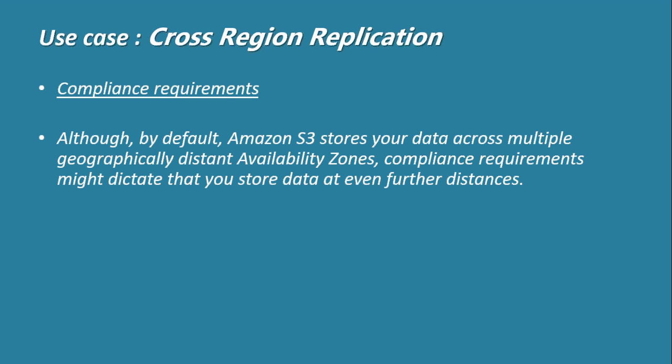The use cases for cross-region replication: the first is compliance requirements. While AWS S3 by default replicates your data across different geographical regions and availability zones for availability, there may be a compliance requirement specifying that your data must reside within specific regions — for example, due to standards like ISO 27001, HIPAA, or PCI DSS.